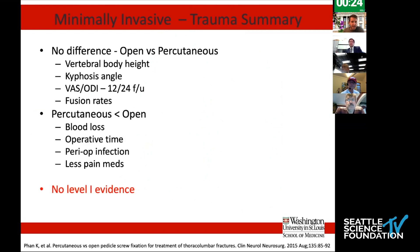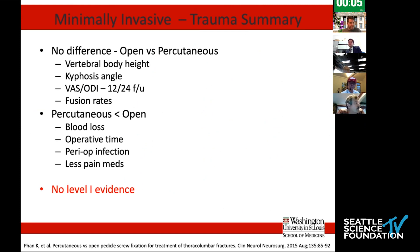At the bottom line now, what we can clearly say in terms of managing these very common injuries is there's really no difference between open versus percutaneous on the correction you're going to get for vertebral body height, kyphotic angle, and patient-reported outcomes at 12 and 24-month follow-up, and even fusion rates. What I can say is that at least my own experience and what appears to be mounting in the literature is that percutaneous had less blood loss, decreased operative time, and fewer infections.